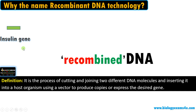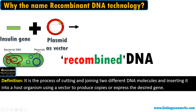Suppose we have an insulin gene — a human insulin gene. The second part is we have a vector. The most common vector is plasmid. Plasmids are extra-chromosomal double-stranded circular DNA molecules present in bacteria, widely used as gene cloning vectors. A vector is simply a DNA molecule that carries our desired gene. So we have a vector and we have our gene.